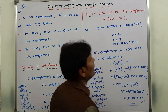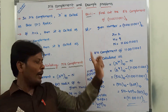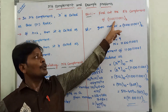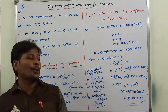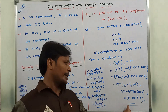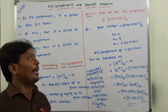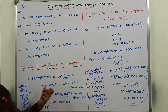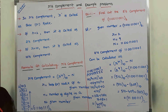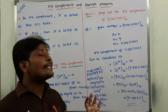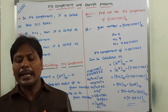So the 2's complement of the given binary number 110011001 is 1100111 base 2. In this way, we find out the 2's complement of a given binary number. Similarly, we can find out the 10's complement of a given number using the same formula.